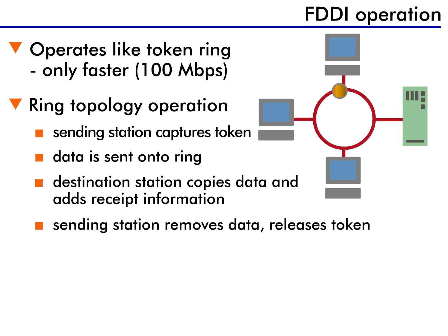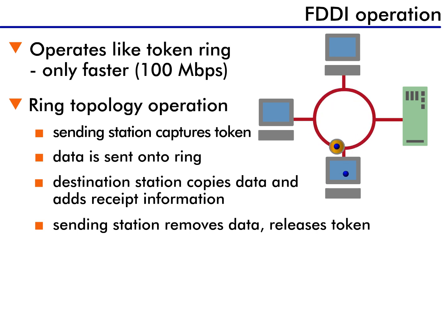FDDI operates identically to Token Ring, only faster. While Token Ring operates at a maximum of 16 megabits per second, FDDI can reach up to 100 megabits per second.